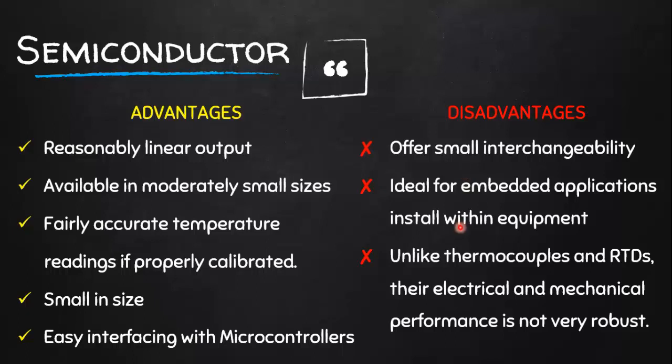The disadvantages of semiconductor ICs are small interchangeability, and they are only ideal for embedded applications where they are installed on the equipment. They are not ideal for applications where remote sensing is required. I hope you understand the working principle of all four types of temperature sensors along with their advantages and disadvantages. For more interesting videos, stay tuned and don't forget to subscribe to our channel. Thank you for watching.